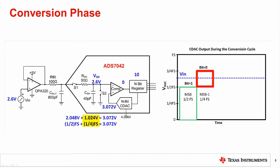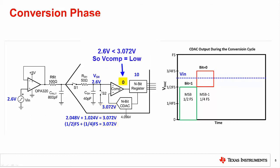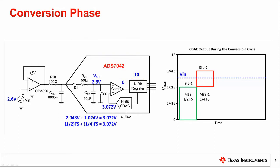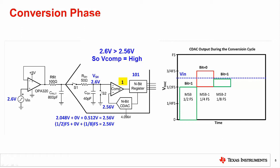For the next comparison, the DAC applies an additional one-fourth full scale so that the DAC output is 3.072 volts. This is greater than VN, so the output of the comparator is logic 0. Notice that the n-bit register accumulates the results. Since the DAC test voltage is greater than the input signal, this bit is turned off and will not be included in subsequent tests. For the next comparison, the DAC applies an additional one-eighth full scale so that the DAC output is 2.56 volts. This voltage is less than VN, so the output of the comparator is logic 1, and this bit is turned on and included in subsequent tests. Notice that the register now has the results from the first three tests.